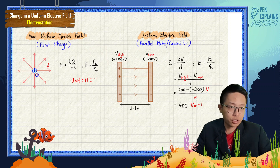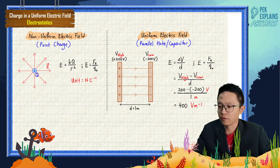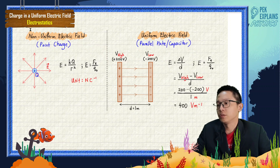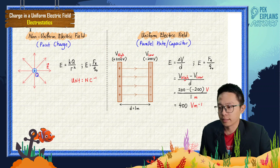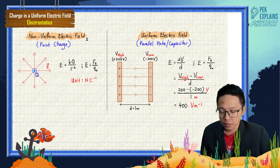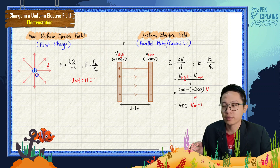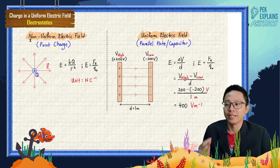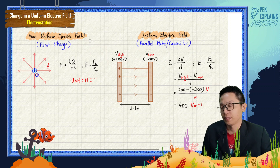Alright. Charge in a uniform electric field. So first of all, we must know the difference between non-uniform electric field and uniform electric field. What is the difference between non-uniform electric field and uniform electric field?